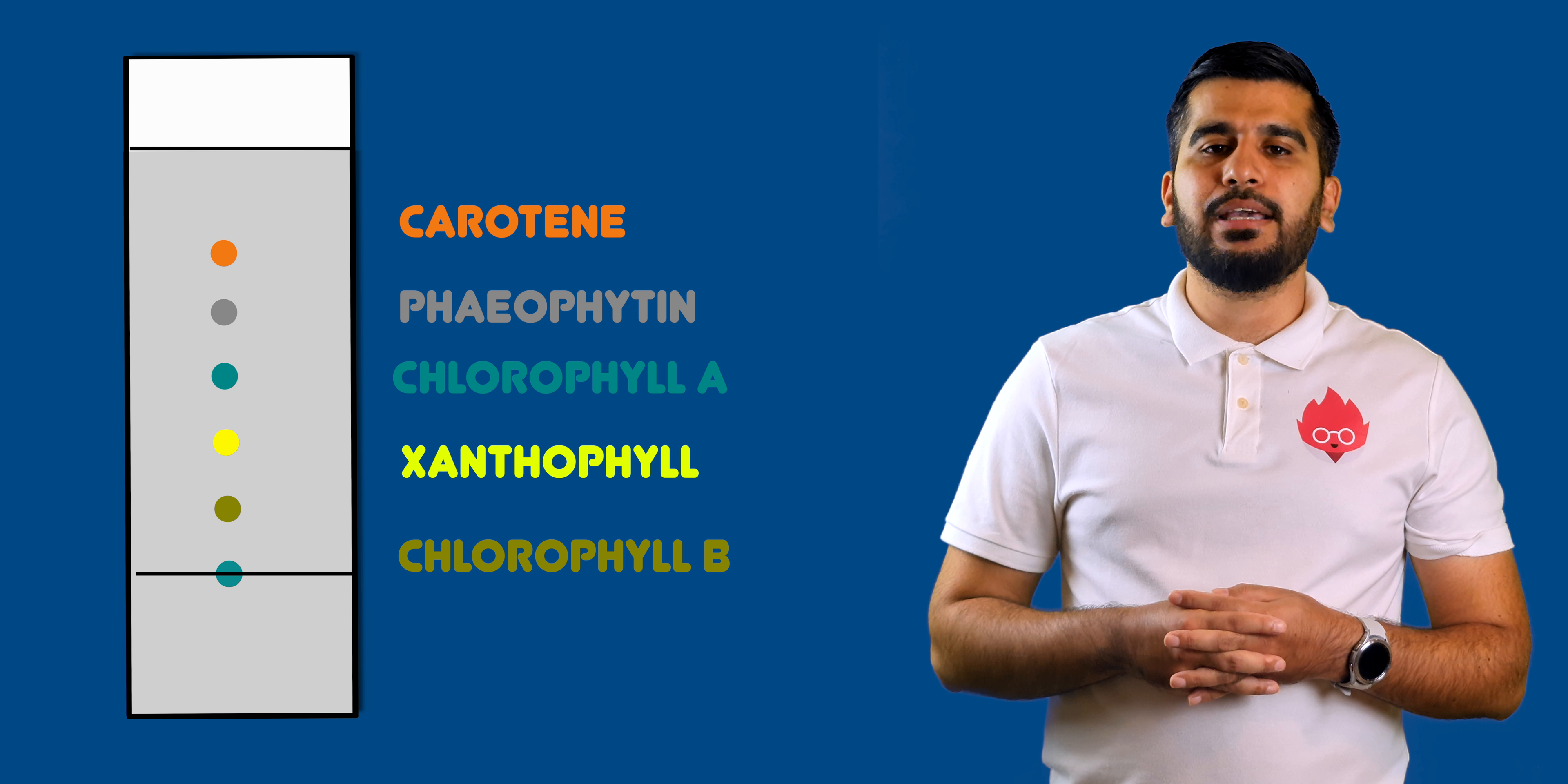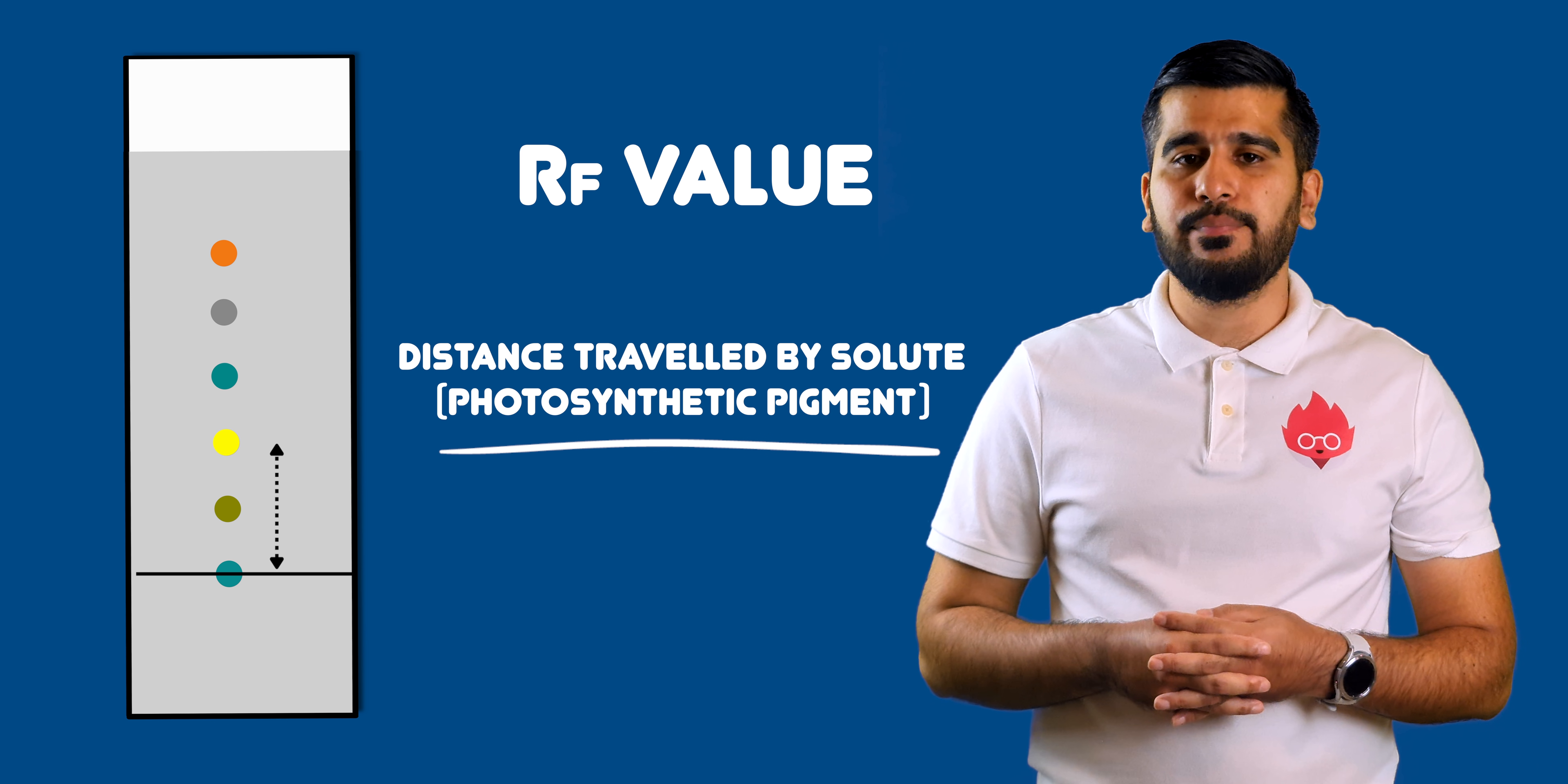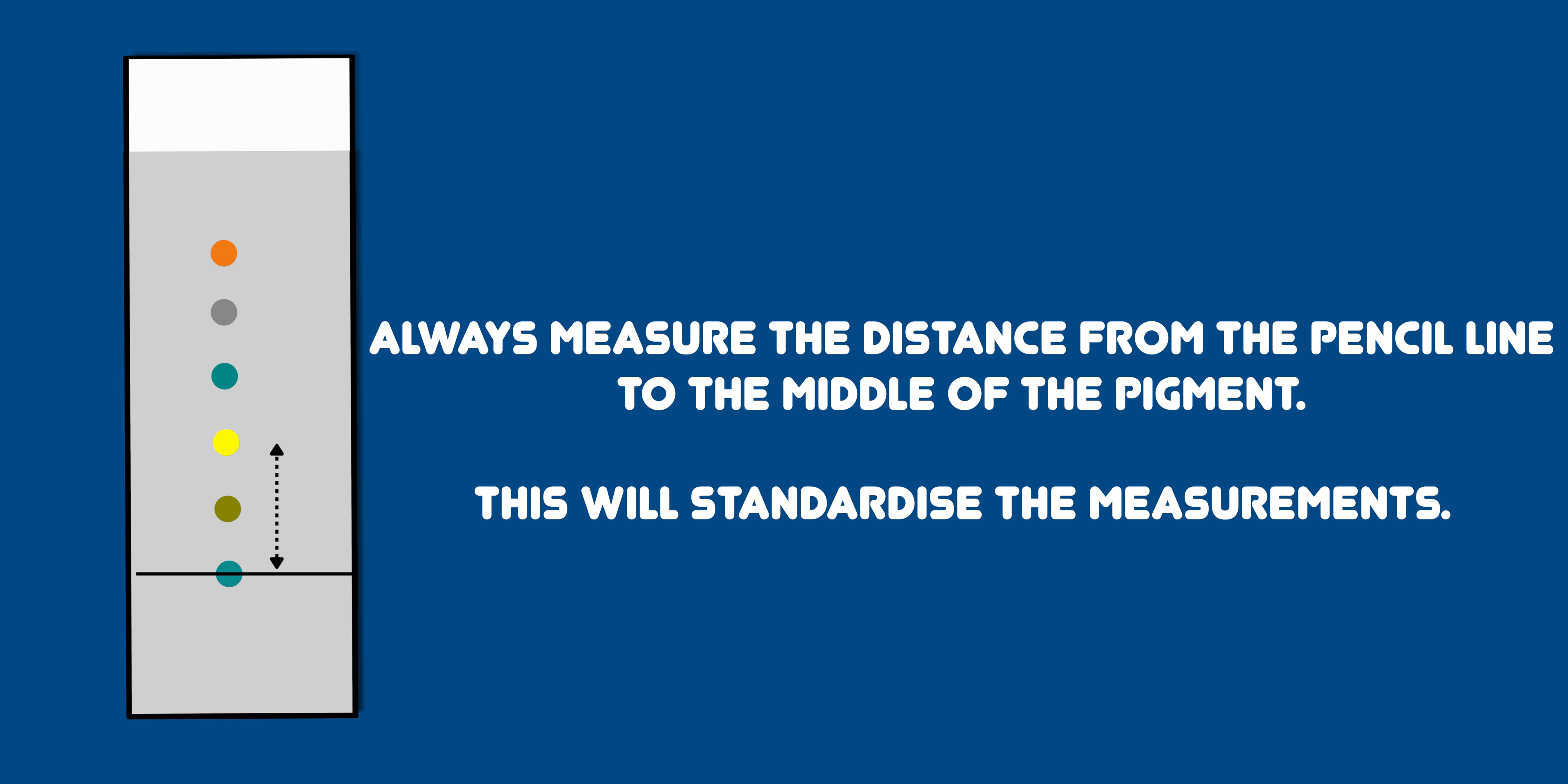These are the separate pigments found in plants. To identify the different pigments, you calculate the RF value. The RF value equals the distance travelled by the component divided by the distance travelled by the solvent. It is important when measuring the distance from the pencil line to the pigment we measure up to the middle of the pigment each time. This will standardise the measurements.